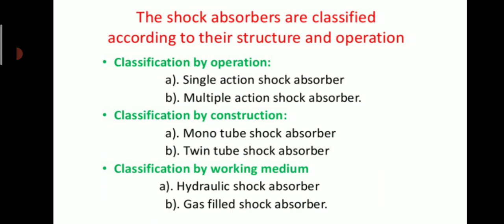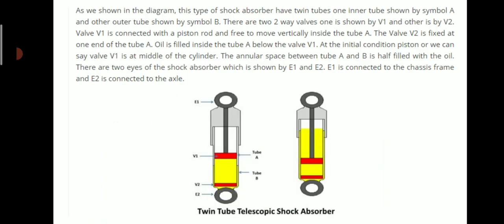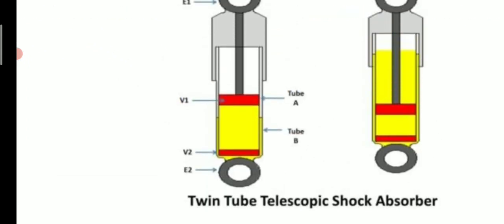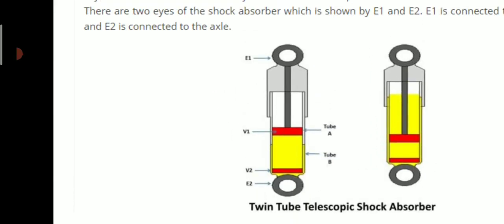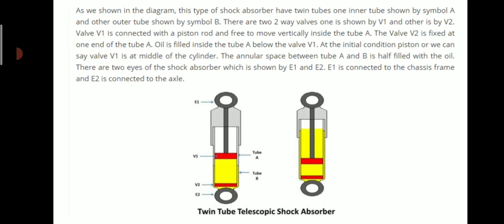This figure indicates the telescopic shock absorber. You can see the components E1, V1, E2, V2 — valves V1 and V2 — and two tubes: tube A and tube B. This type of shock absorber has two tubes: one inner tube shown by symbol A and one outer tube shown by symbol B. There are two valves — V1 and V2. Valve V1 is connected with the piston rod and is free to move vertically inside tube A, while valve V2 is fixed at the other end of tube A. Oil is filled inside tube A between the valves.